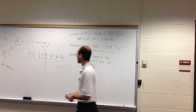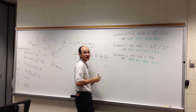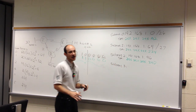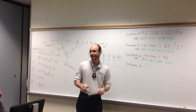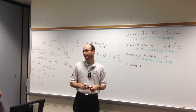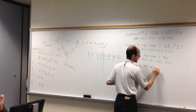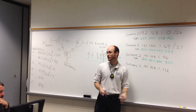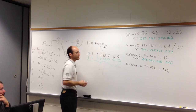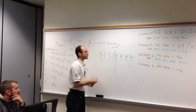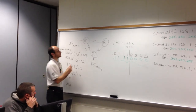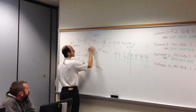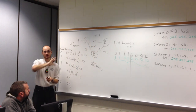Subnet three's network address without looking at binary: just add the previous subnet's width. 96 plus 16 equals 112 — 192.168.1.112. This shortcut only works when you're not crossing octets. Subnets three, four, and five are all the WANs — does it matter which WAN gets which subnet? They're all size four, so no.